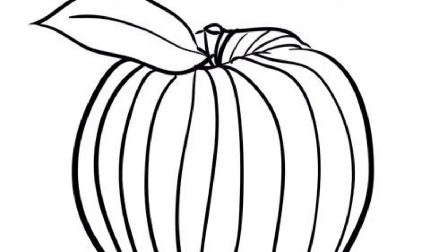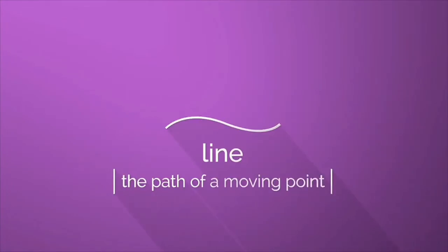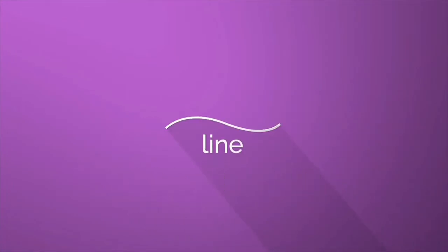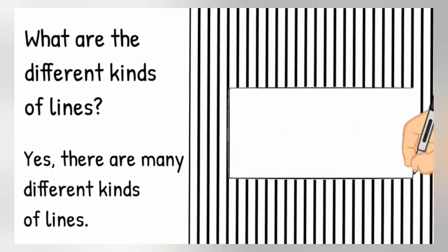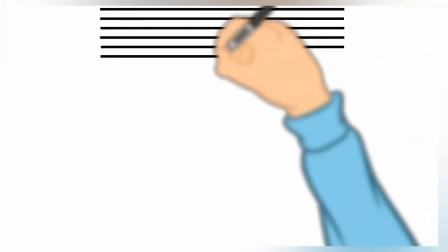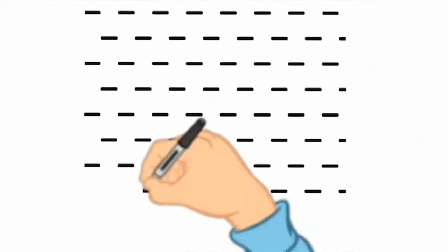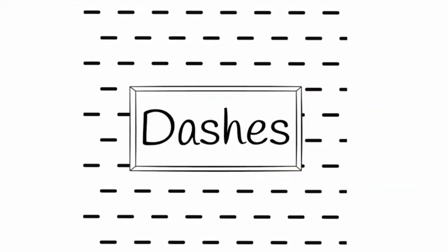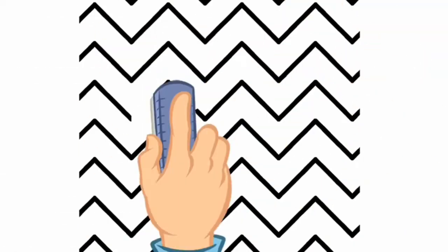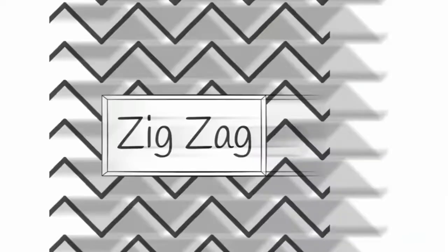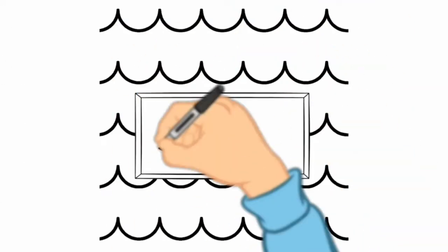Line is a path of a moving point and is used to define the shape of an object. There are different types of line, including vertical line, horizontal line, diagonal line, dotted line (also known as dashes), zigzag line, and curved line.